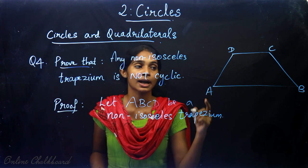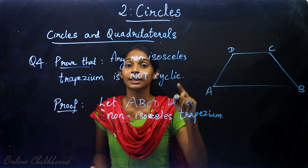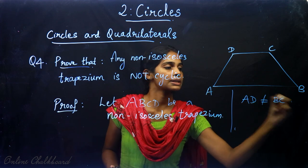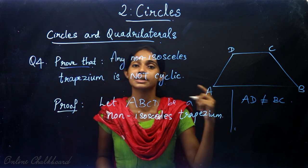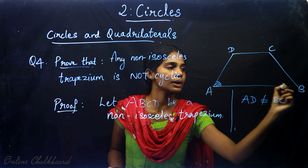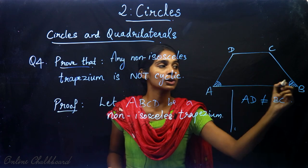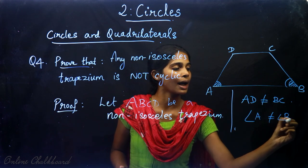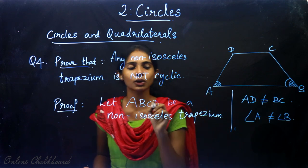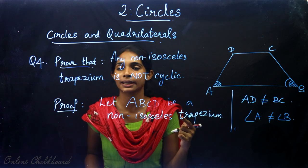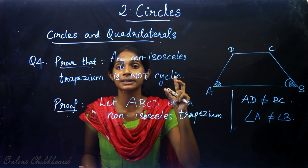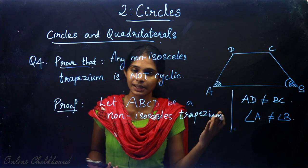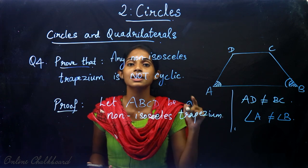Since ABCD is a non-isosceles trapezium, angle A will not be equal to angle B. To check if it is cyclic, we check whether the opposite angles are supplementary. If opposite angles sum to 180, it is cyclic; if not, it is non-cyclic. We will examine the pair angle B and angle D.